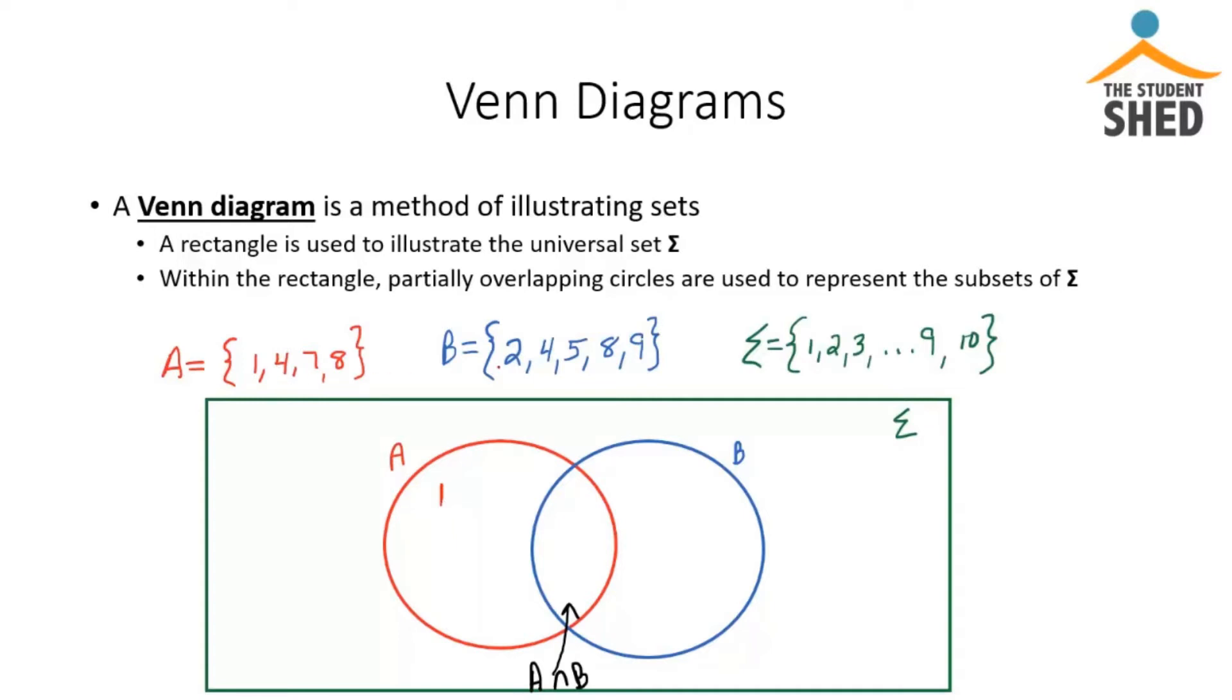Set A has number 4 in it but also set B has number 4 in it. So we're in the overlapping section of the two circles because 4 is in both A and B. So we're going to put it in the middle where they overlap.